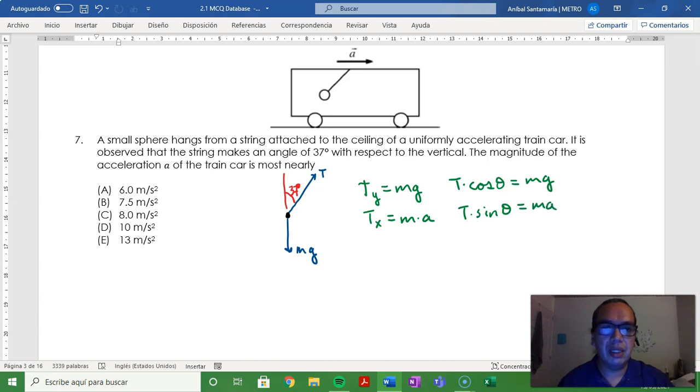Dividing the second equation into the first one yields T sine of theta divided by T cosine of theta is equal to ma over mg. The T's cancel out, and what we have is that the acceleration is equal to g times the tangent of 37 degrees.